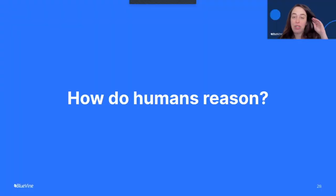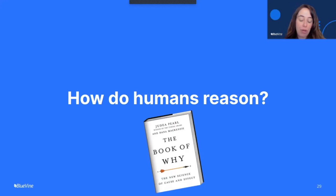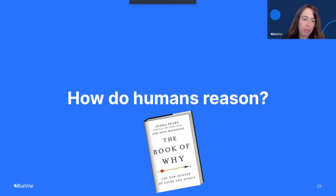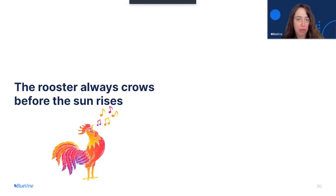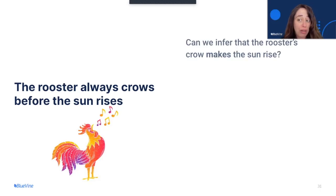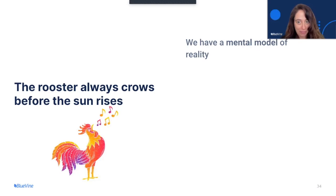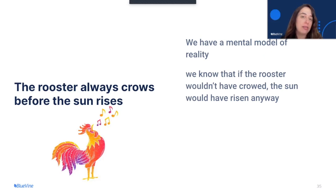Before diving into my suggested method, I want to spend a few minutes and try to formalize how humans reason. I'll discuss a few concepts from The Book of Why by Judea Pearl, who is a prominent computer researcher and philosopher in the field of causality. We'll start with a simple example: the rooster always crows before the sun rises. Can we infer that the rooster's crow makes the sun rise? Of course not. But why? We have a mental model of reality, and we know that if the rooster wouldn't have crowed, the sun would have risen anyway. And this is a counterfactual.